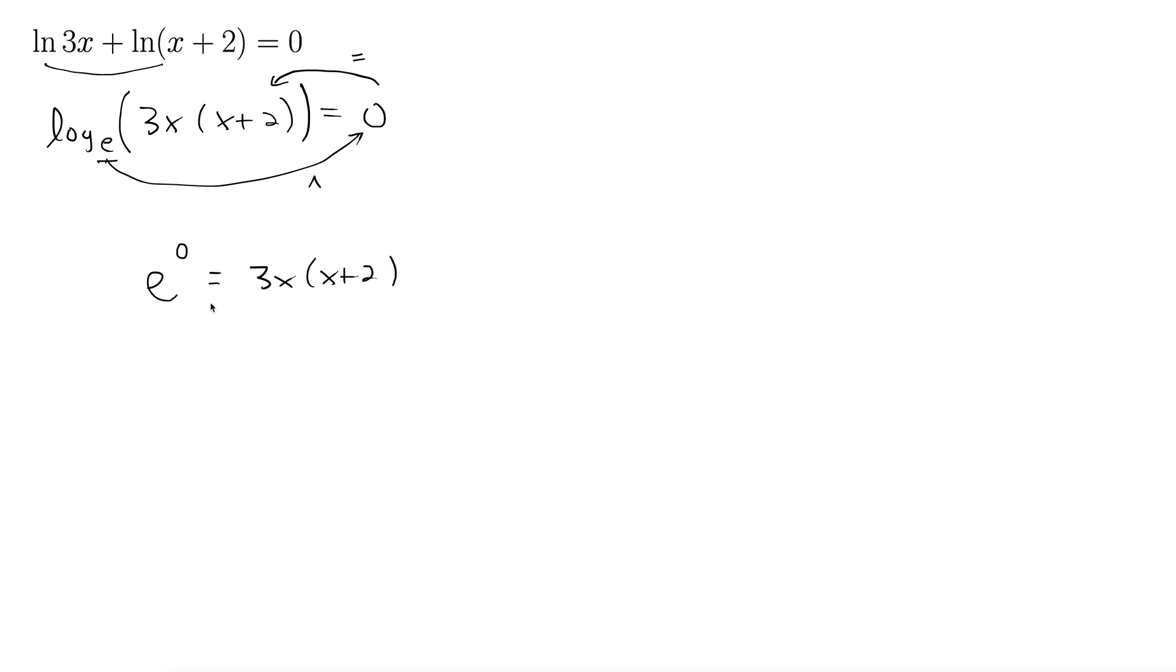Now e to the 0 is 1. Anything to the 0 is 1. So we have 1 equals 3x. I'm just going to multiply this 3x through: 3x squared plus 6x. Anytime you see an x squared, you should be thinking you want the other side of that equation to be 0, because it's probably going to be a quadratic that we need to solve. So 0 equals 3x squared plus 6x minus 1.